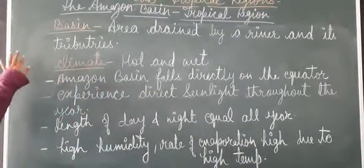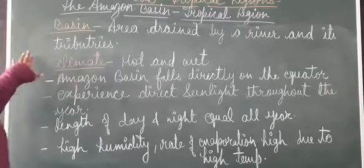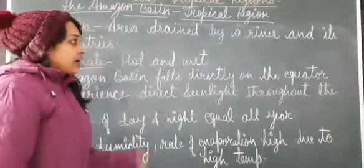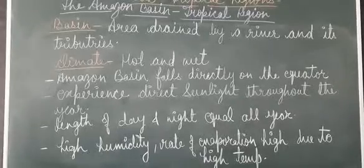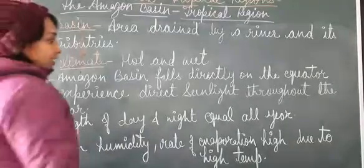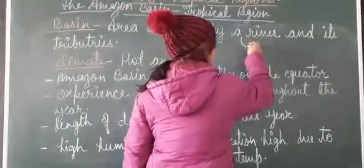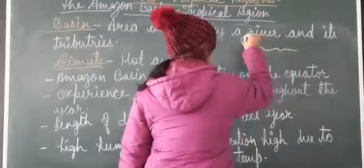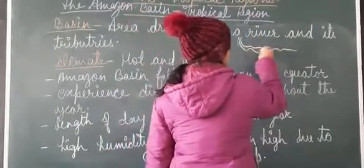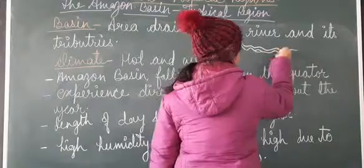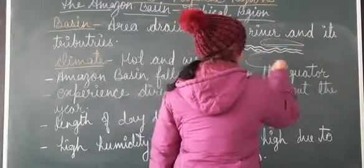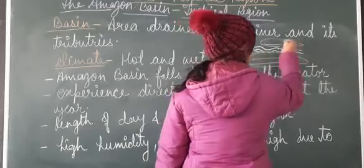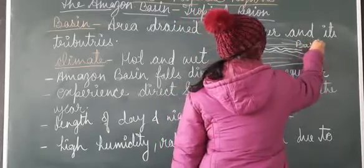First, we will take what is Basin. Basin is the area drained by a river and its tributaries. That particular area where the river flows and the area around the river is called Basin.